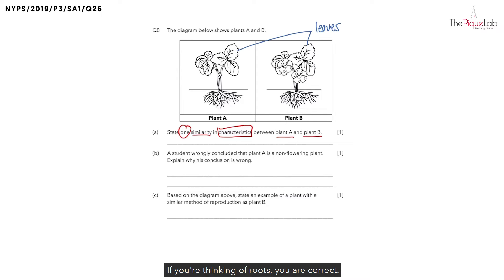If you are thinking of roots, you are correct. Both plants have roots as well. There's one more common plant part between them. Can you see it? It is the presence of stem. Now in this case, do you think the plant has strong stem or weak stem? The plant has strong stem. Let's write that down.